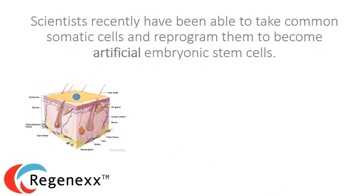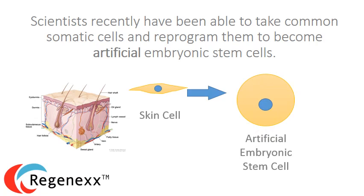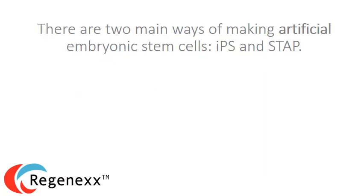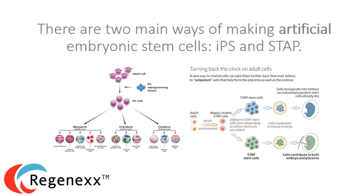Scientists recently have been able to take common somatic cells like skin cells and reprogram them to become artificial embryonic stem cells. There are two main ways of making artificial embryonic stem cells: IPS and STAP.